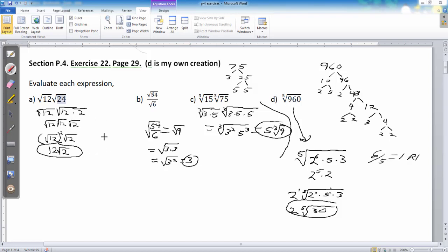You could also do something similar over here. If you didn't notice what I did here, and you just broke both numbers down. Well, 12 is 4 times 3, 2 times 2, and 24 is 4 times 6, 2 times 3, 2 times 2.